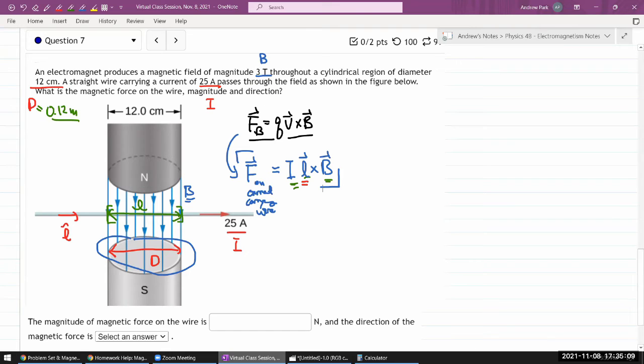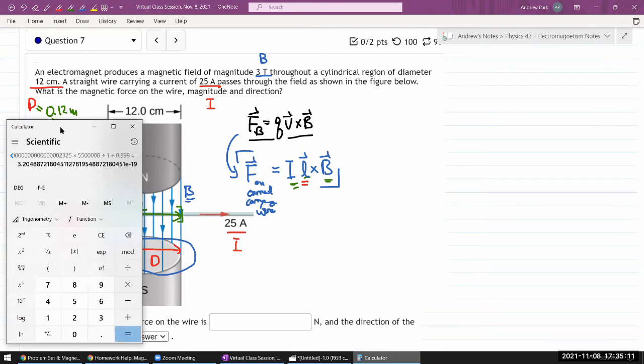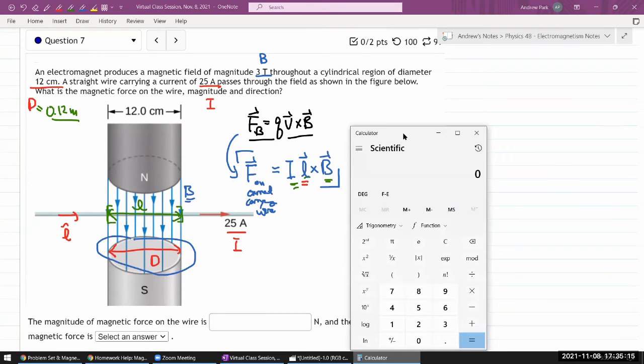Let me do that on calculator. So product of those three things is current 25 amperes, which is a huge amount of current by the way, times the length of the wire 0.12 meter times. And for the cross product, I'm kind of ignoring the cross product because I can see that here the direction of current and direction of magnetic field are perpendicular.